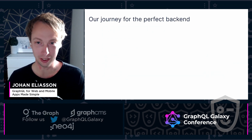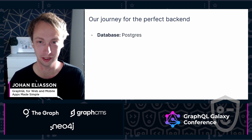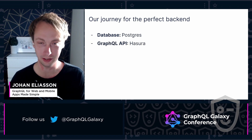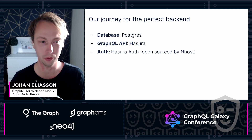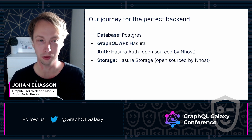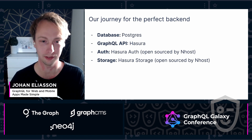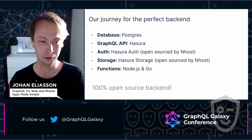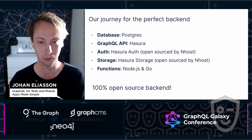In our effort to make building apps simple — this is kind of our journey for the perfect backend. We have the database, where we use Postgres. For the GraphQL API, we use Hasura. For authentication, we open sourced our own server called Hasura Auth, which is integrated into Hasura and manages everything related to authentication. Same thing with storage — we open sourced something called Hasura Storage, also very well integrated with Hasura, where you can upload any file or object, backed by S3, either AWS S3 or Minio. For functions, we use Node.js and Go. This whole stack is 100% open source, which is also very important for us.